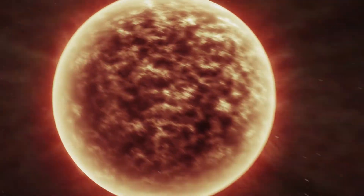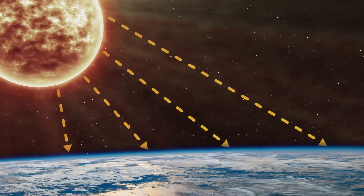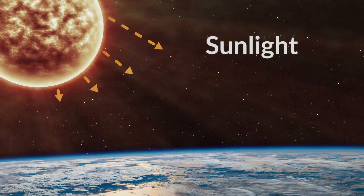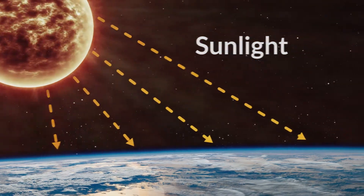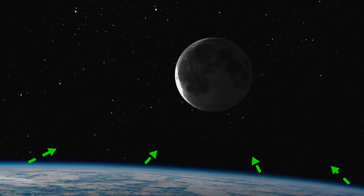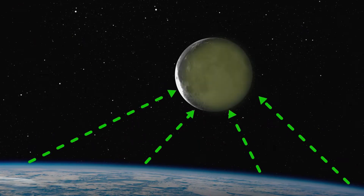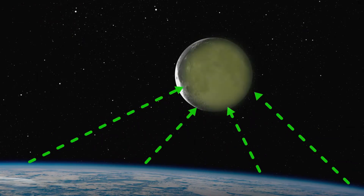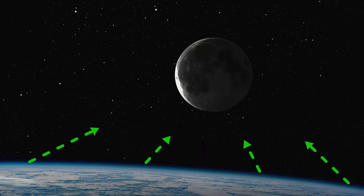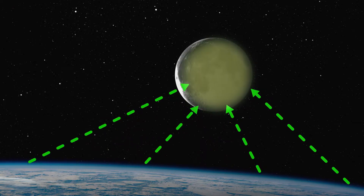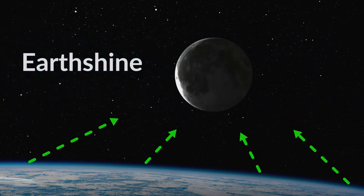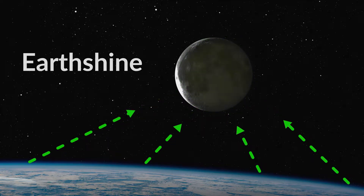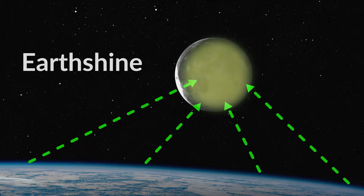There is something else awesome going on too. There are so many chlorophyll molecules on Earth that the sunlight that strikes the Earth and then reflects from it to the Moon includes the green of plant life — that is, the spectral composition of chlorophyll. That reflected light is called Earthshine. You see it in the dark silhouette of the rest of the Moon when it's in the crescent or quarter stage.